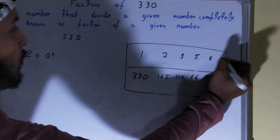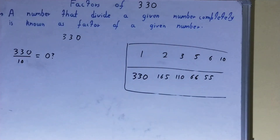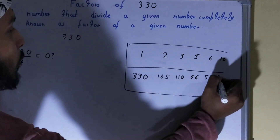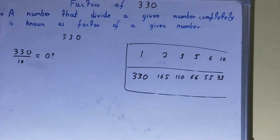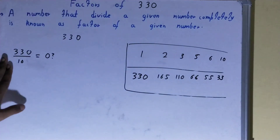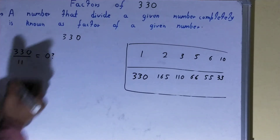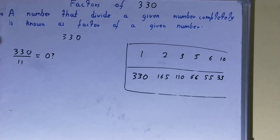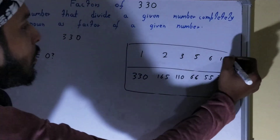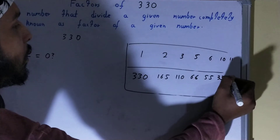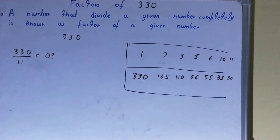So 10 is a factor. We write it here, and 10 into 33 times, so 33 will also be a factor. After 10, with 11 also it is clearly possible. So 11 is a factor. We write 11 here, and 11 into 30 times, so 30 will also be a factor.